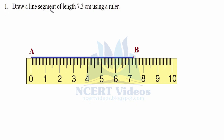Question one: draw a line segment of length 7.3 cm using a ruler. We have to use only a ruler to construct a line of 7.3 cm. A line segment is finite and can be measured. Place the first dot on the zero marking of the ruler and the second one on 7.3 — this is one, two, three — 7.3.